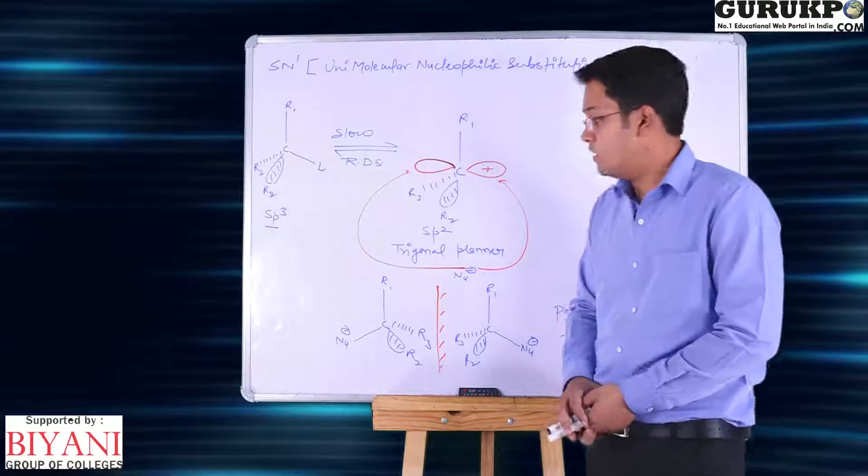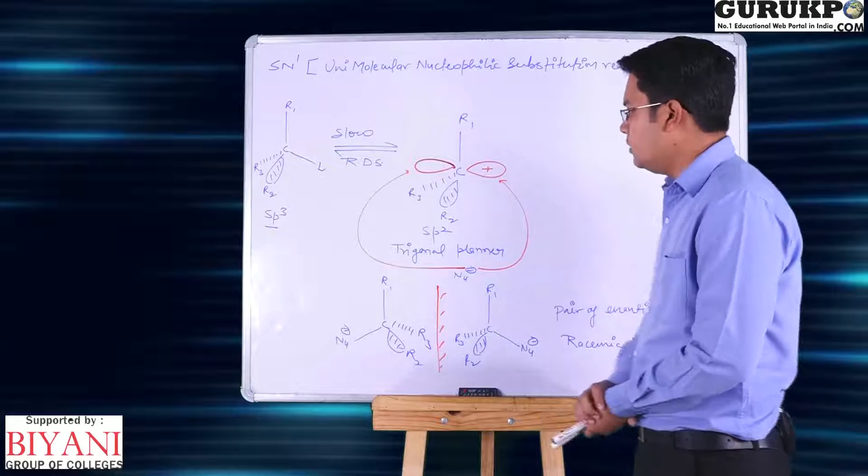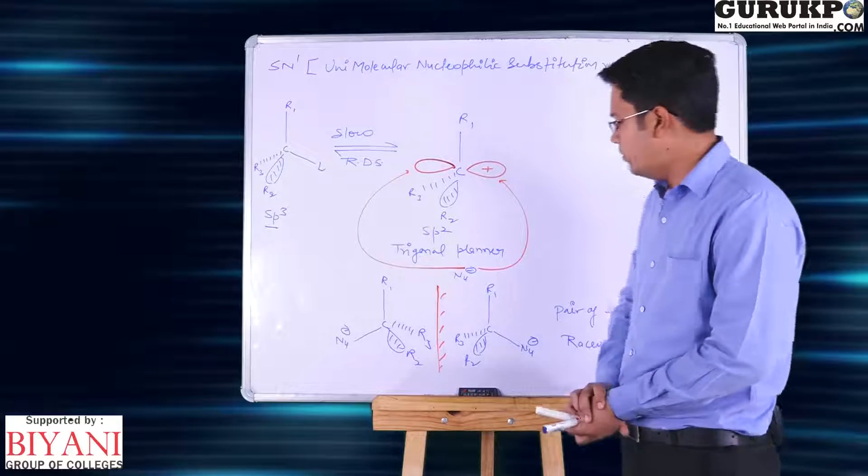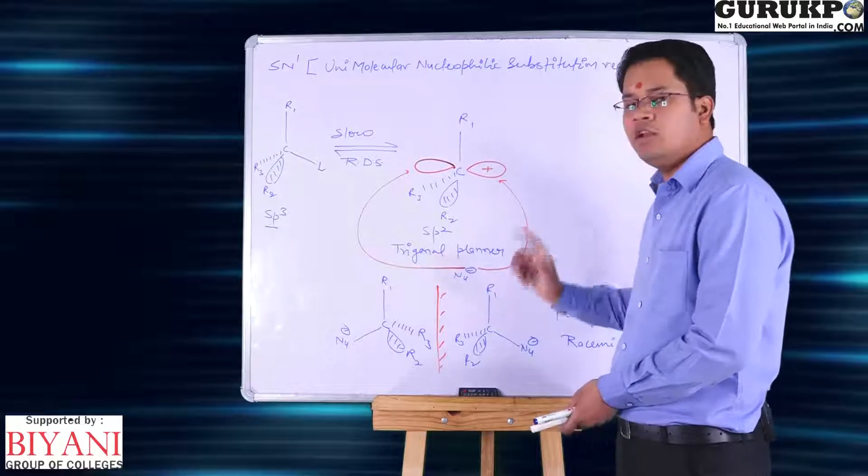Its shape is tetrahedral. After the reaction one intermediate carbocation is formed that is sp2 hybridized and have trigonal planar shape.